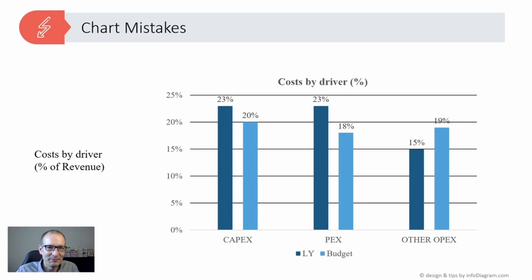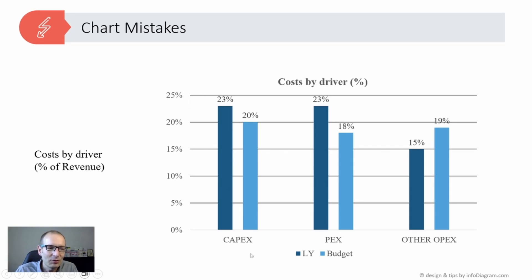Let's start with the mistakes. Here is our bar chart. This bar chart presents a comparison of expenses — capital expenses, personal expenses, and other types of operational expenses — and we are comparing last year's values with the current budget and current status.